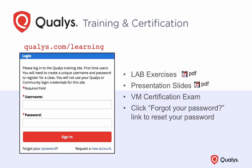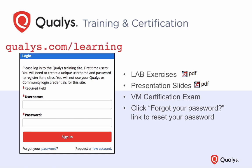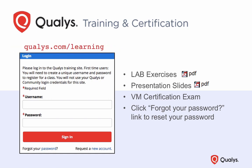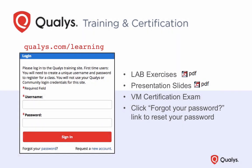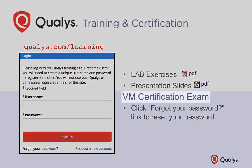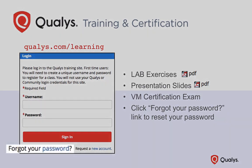The Qualys training and certification portal, qualys.com/learning, is your source for all Qualys training material. Here you will find the Vulnerability Management Lab Exercise document and presentation slides. If you've not already downloaded these documents, please do so now. You will need some type of PDF file reader, like Adobe Acrobat, to view these files. Once you've completed the Vulnerability Management videos and labs, you can launch the VM certification exam from this site. You'll find a link to reset your learner account password just below the Sign In button.